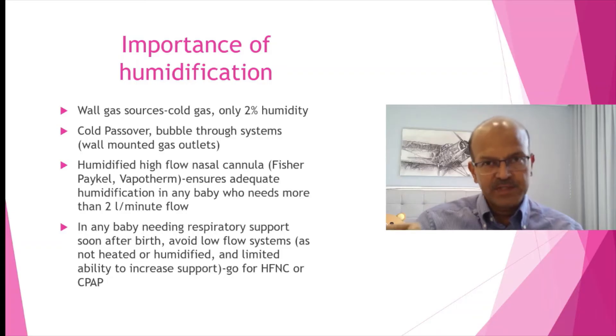They don't need very high pressures unless the lung disease is significant. So a flow of 3 to 4 liters. If you are thinking of just giving oxygen, start with 3 to 4 liters flow and titrate the oxygen to the saturation. So this is the point I was making. Go for high flow and if baby is worsening, go for CPAP.